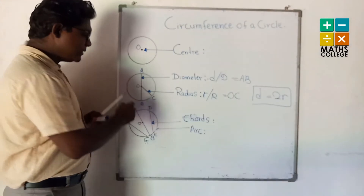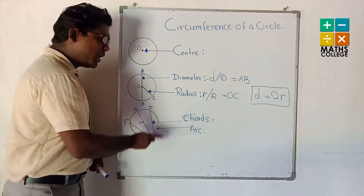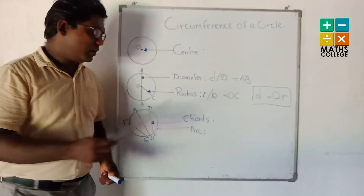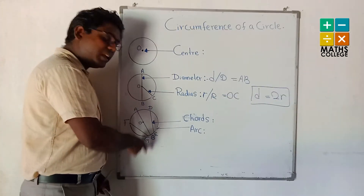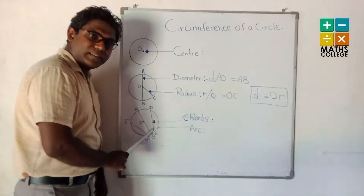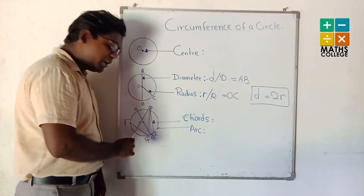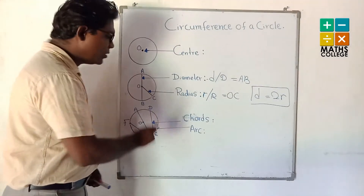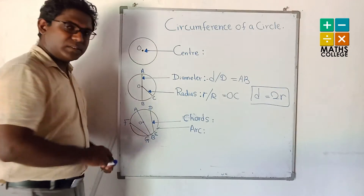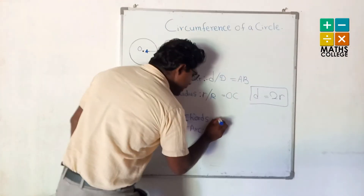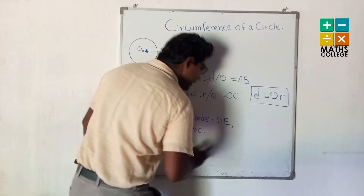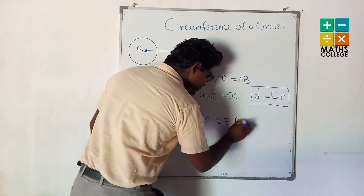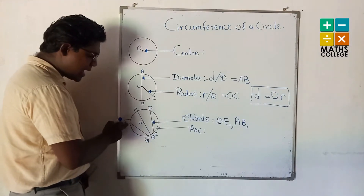Next you can see two more elements. First is chord. Chord means the line joining any two points of the circle — we call it chord. You can see here three chords: first chord is BE, another one is AB, and also FG.